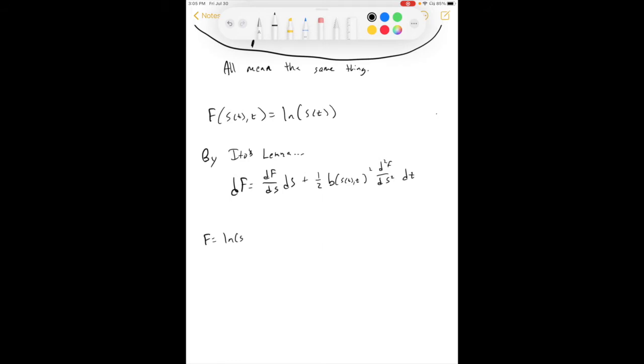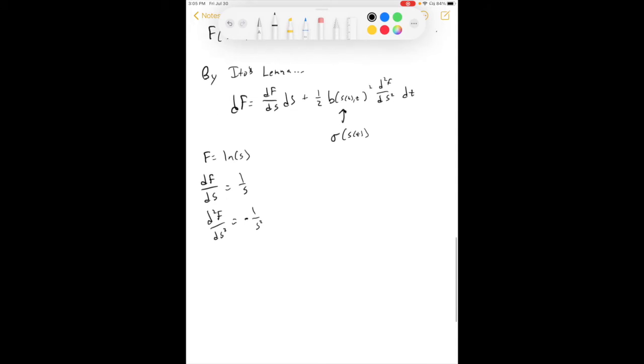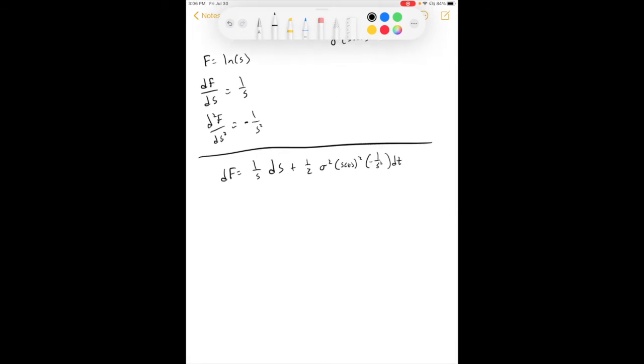So taking our f, which is the natural log of S, that means the derivative of f with respect to S is 1 over S, and the second derivative with respect to S is negative 1 over S squared. Now this b right here, that was just sigma S of t. So plugging in what we have now, we've got df is equal to 1 over S times dS plus one half sigma squared S of t squared, the second derivative is negative 1 over S squared dt. So you can see some stuff is going to cancel out here. We've got S squared and an S squared on the bottom. df is equal to 1 over S dS plus one half, let's go ahead and move that negative out to the front, minus one half sigma squared dt.